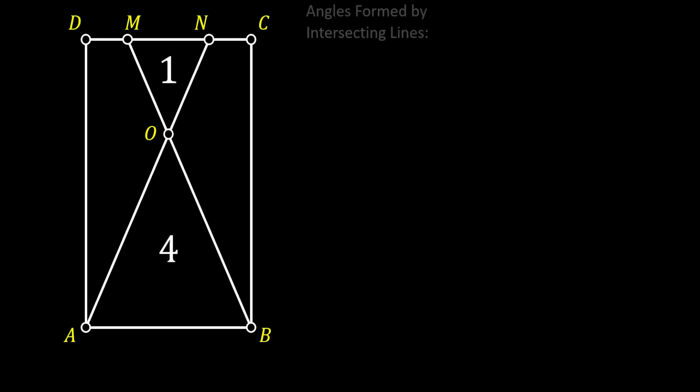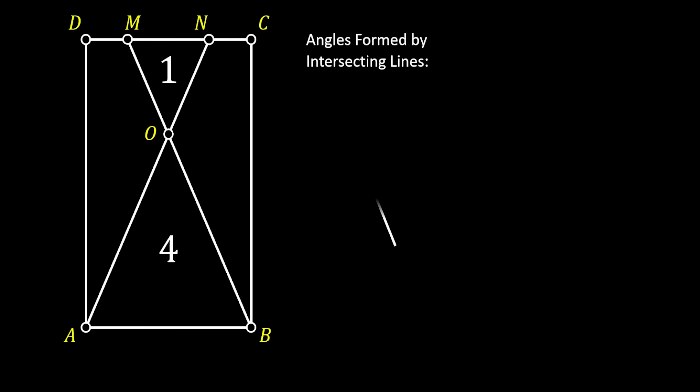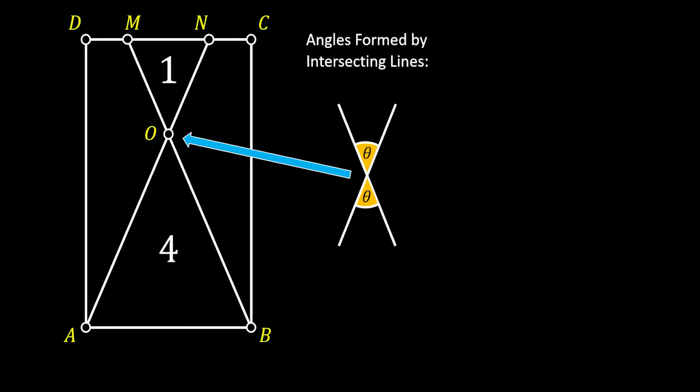Now we will use one really interesting property of angles formed by intersecting lines, which states that two angles formed by intersecting lines are actually equal. We can use this in our case since the lines MB and AN are intersecting lines. This means that the two angles at the apex of our two triangles are actually equal.